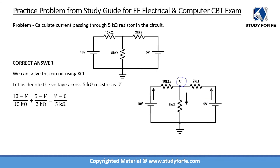Writing the KCL at this node: we have 10 minus V divided by 10 kilo ohms, where 10 volts is the higher potential and V is the node voltage — this gives the current through the 10 kilo ohm resistor. Similarly, 5 minus V divided by 2 kilo ohms gives the current from the 5 volt source. These two currents represent the sum of I_in. The I_out is V minus 0 volts divided by 5 kilo ohms.